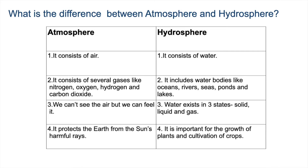What is the difference between atmosphere and hydrosphere? Atmosphere consists of air, while hydrosphere consists of water. Atmosphere consists of several gases like nitrogen, oxygen, hydrogen, and carbon dioxide. Hydrosphere includes water bodies like oceans, lakes, rivers, seas, and ponds.